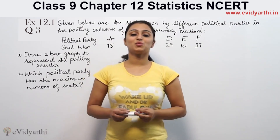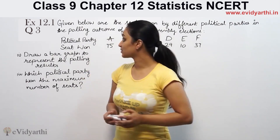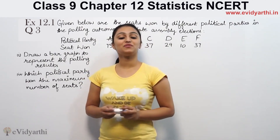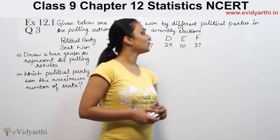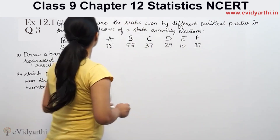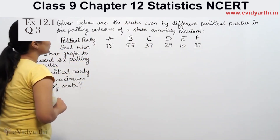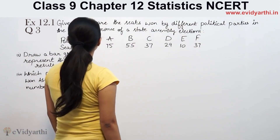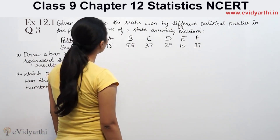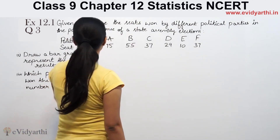Hi, this is Kamishko with another question of statistics. This is question number 3 from exercise 14.3, page 258 from NCRB. This says: given below are the seats won by different political parties in the polling results of the state assembly elections.